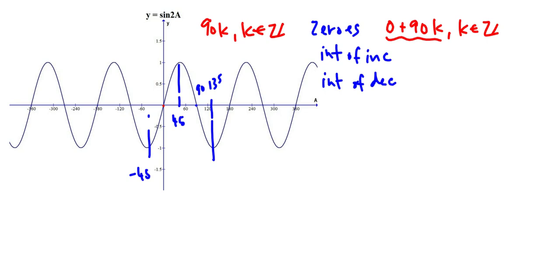The intervals of increase starts at negative 45 and goes to 45, and it happens every 180k, because that's the period, so negative 45 plus 180k to 45 plus 180k, k in Z.